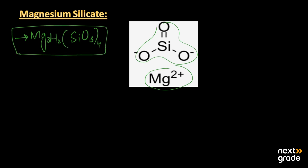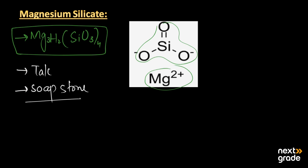The main common names used for magnesium silicate are talc and soapstone. Scientists have given both these names — the first one is talc and the second one is soapstone.